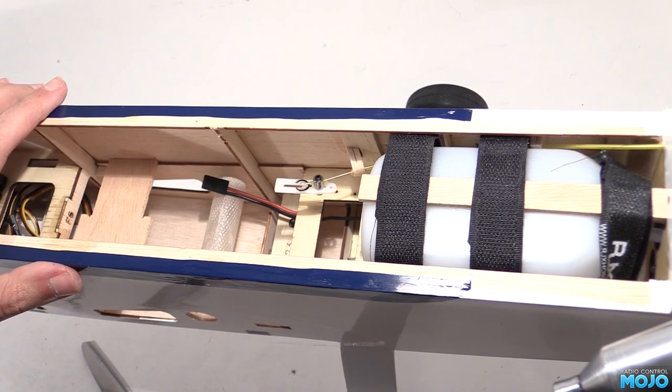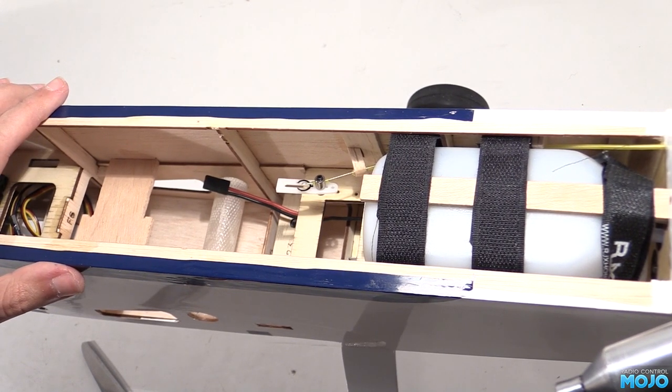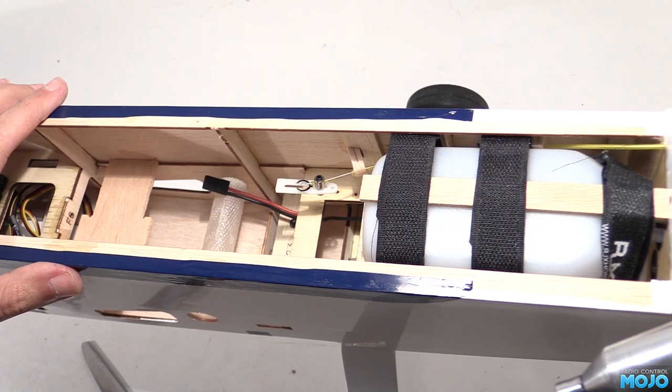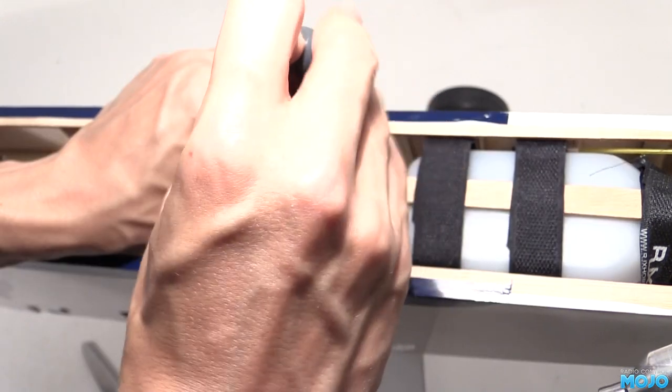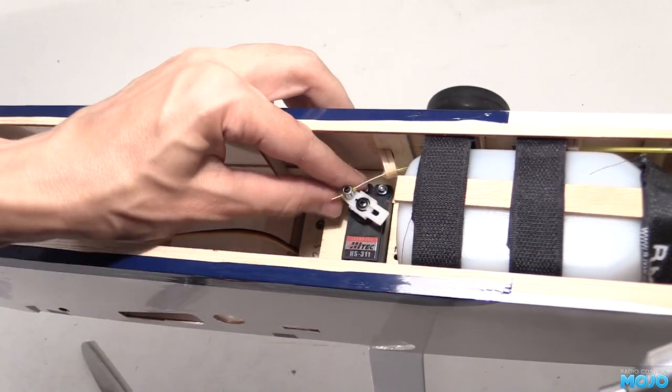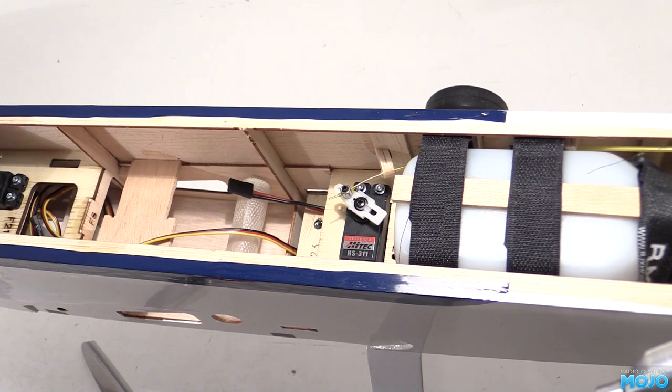Also the chances are the center of gravity will end up wanting to move back a bit. Most models are quite conservative. With the battery further back we won't need the front strap at all. The throttle servo is back in now. And because we marked up the arm there's no worries about having to reset the linkage. Nice.